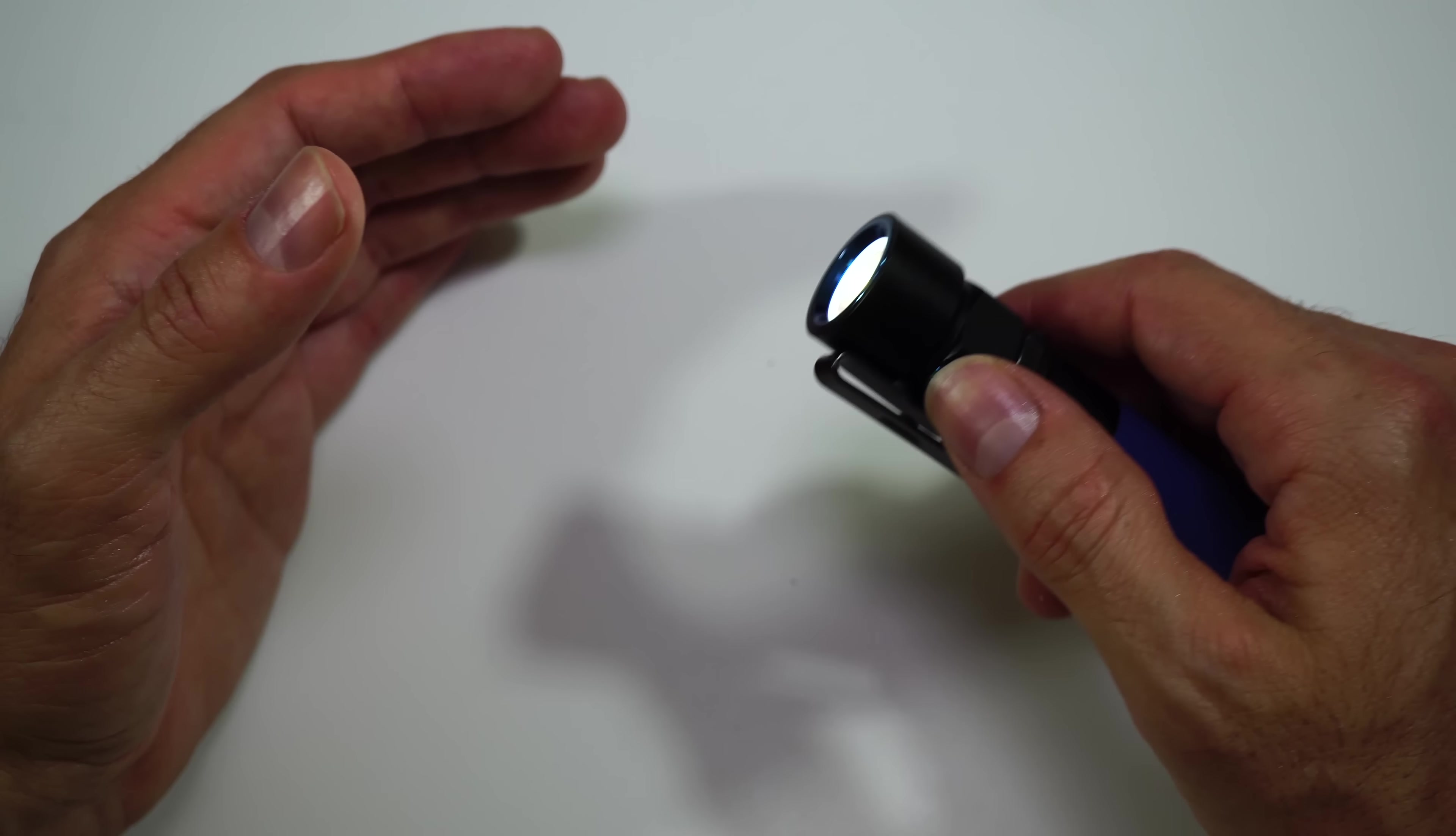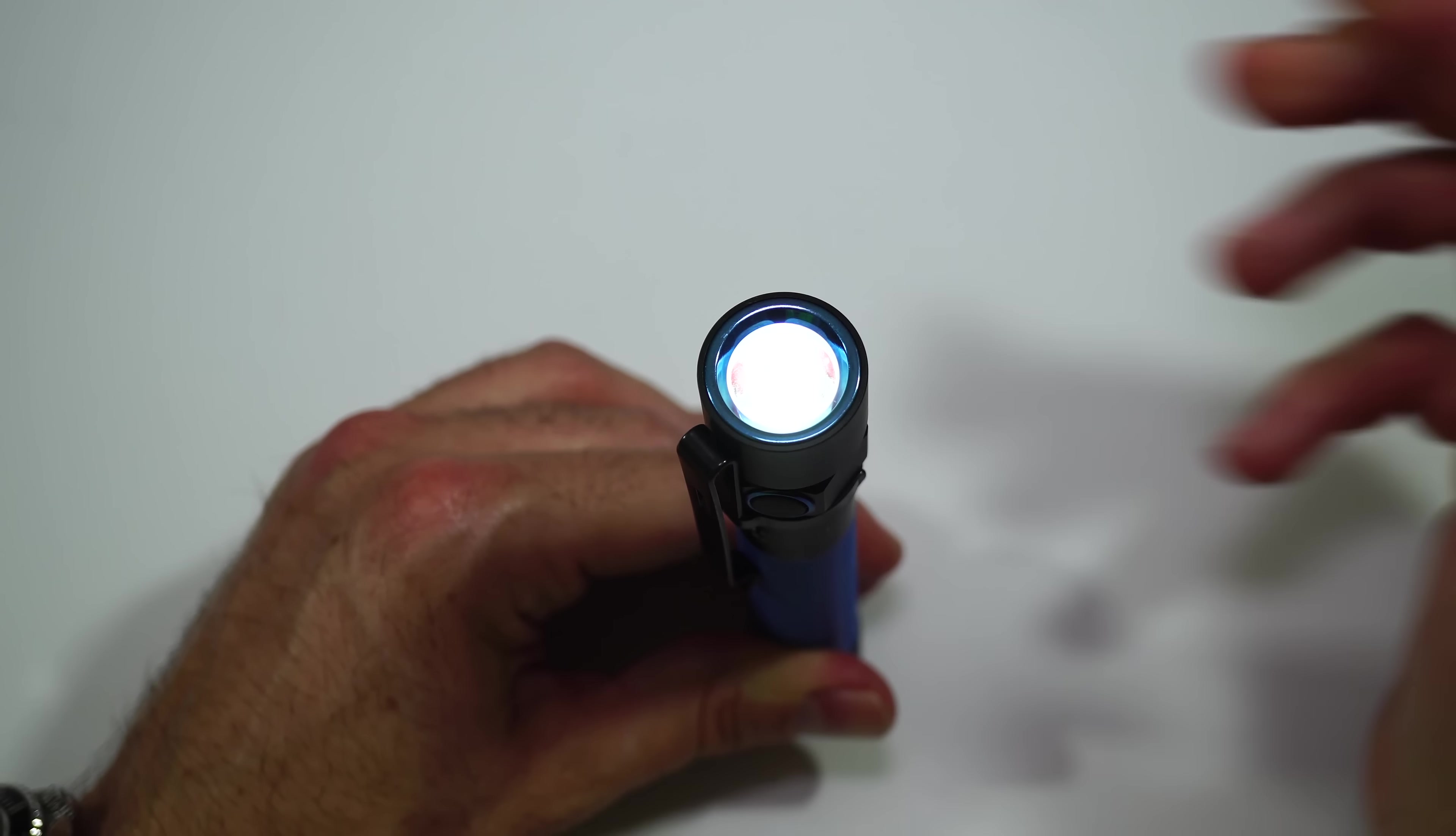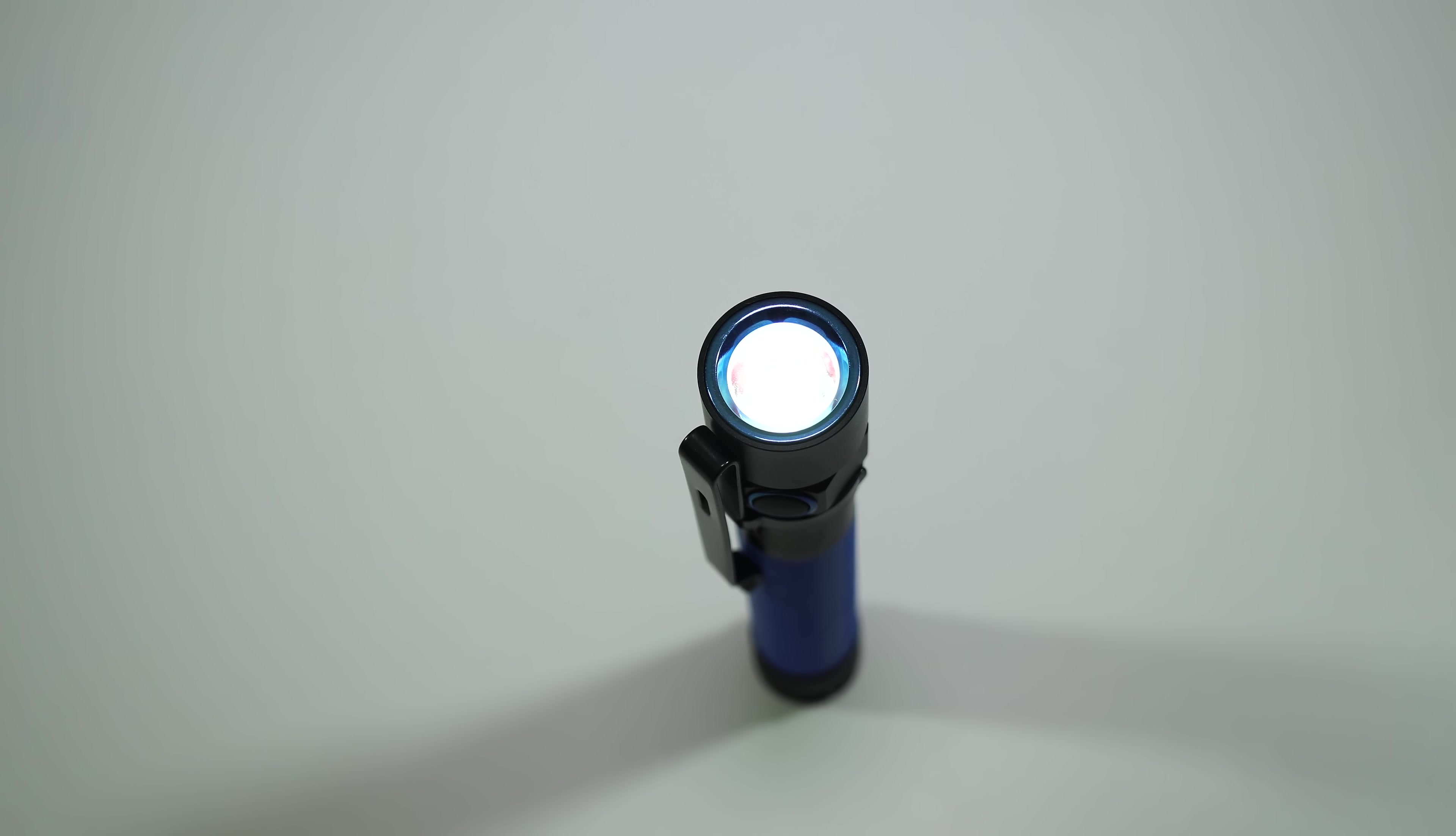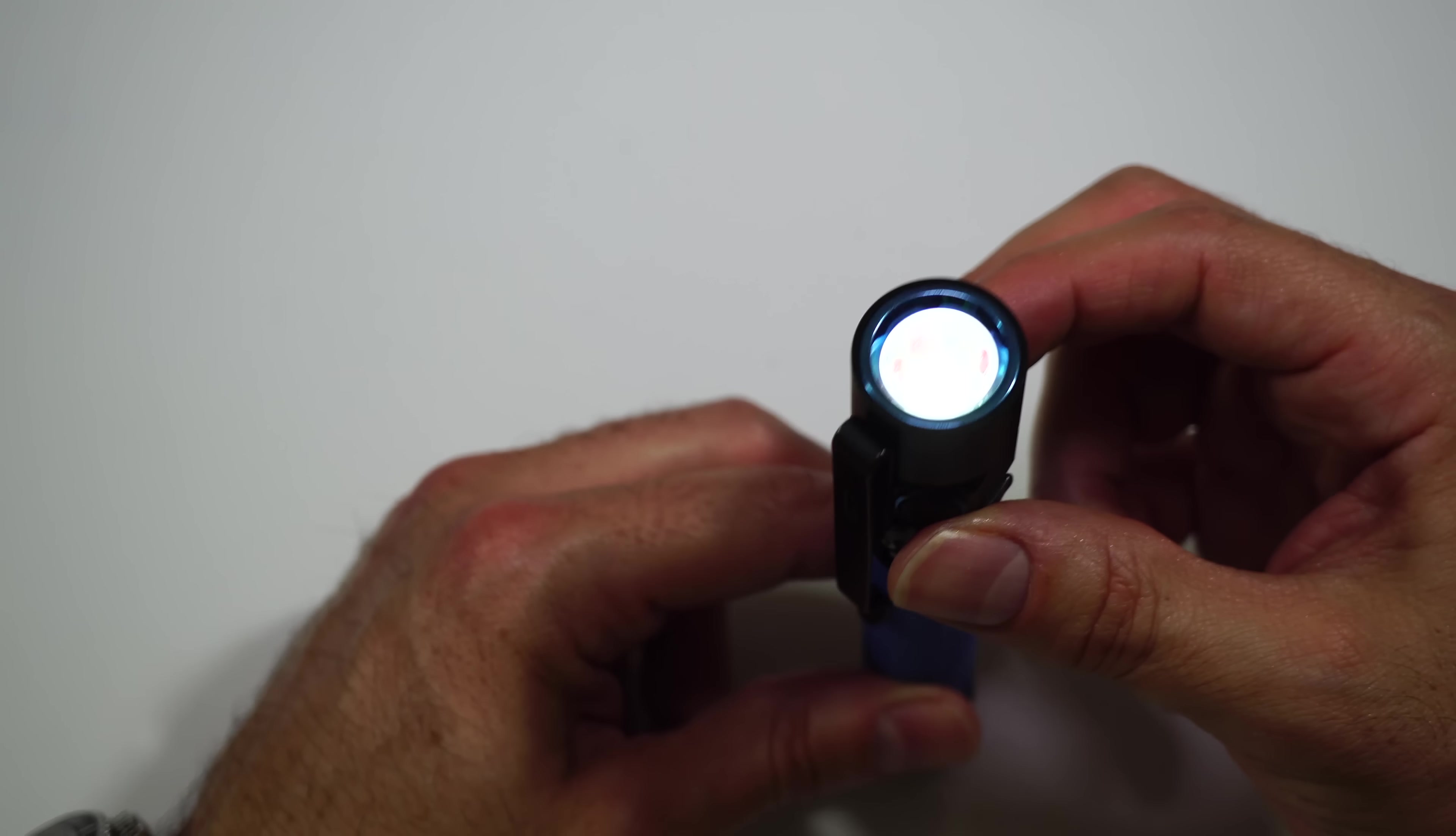Another interesting feature on this light is that it also has a timer. It has two timers, actually. A three minute timer and a nine minute timer. There's the nine minute timer. Click it again. There's one flash. That means it's in a three minute timer. So if you want to use this as a nightlight, anything like that, you could set the timer, maybe for the kids, something like that.